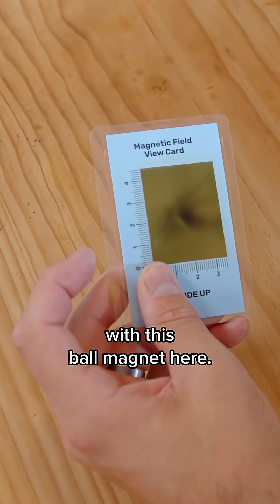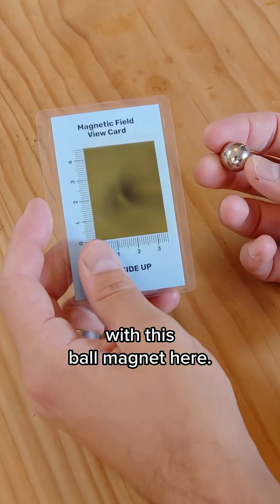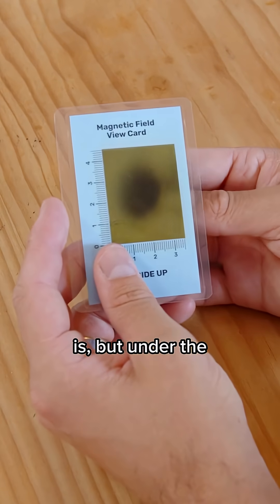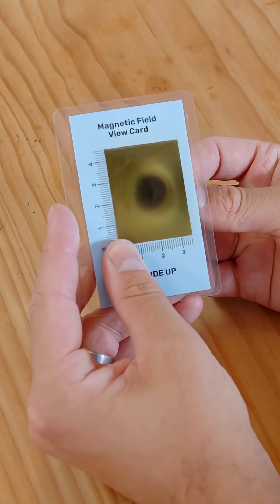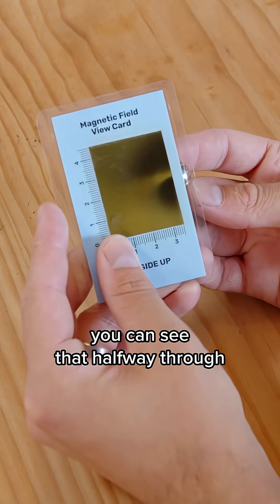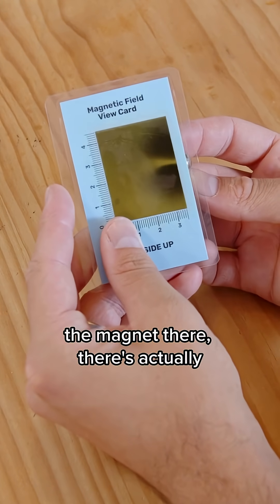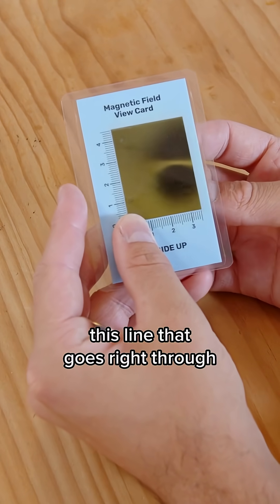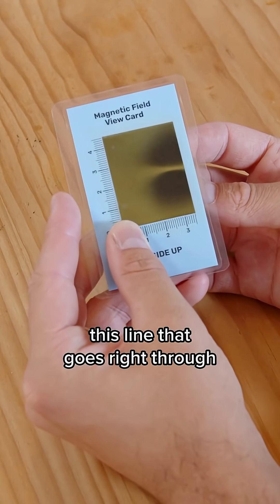Now let me show you something cool with this bowl magnet here. Just by looking at it you won't be able to tell where north and south is but under the magnetic viewing film you can see that halfway through the magnet there's actually this line it goes right through the middle of it.